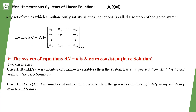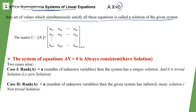We now discuss the solution of the homogeneous system. The solution is the set of values that simultaneously satisfy all the equations. Because the right-hand side is 0, there is no need to write the augmented matrix — the augmented matrix is equivalent to the coefficient matrix.